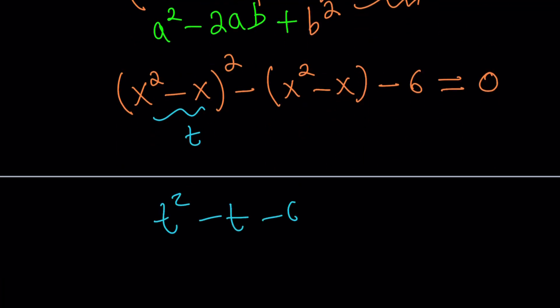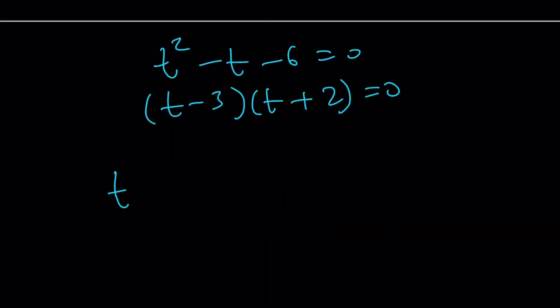t squared minus t minus 6 equals 0. t minus 3 times t plus 2 is equal to 0. t is equal to 3, t is equal to negative 2. But t is x squared minus x.